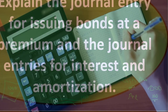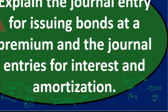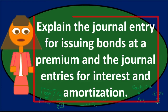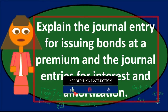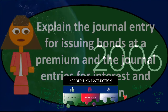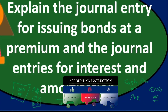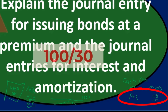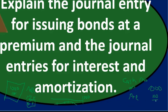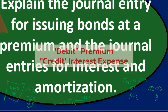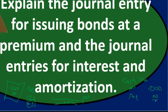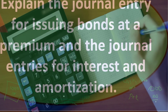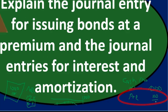For amortization, the straight-line method is the simpler approach: take the $100 premium and divide it by the number of periods — say 30 semi-annual periods over a 15-year bond — and allocate that amount each period. The journal entry debits the premium and credits interest expense, which reduces interest expense. This makes sense because the premium reflects the difference between the stated and market rates.